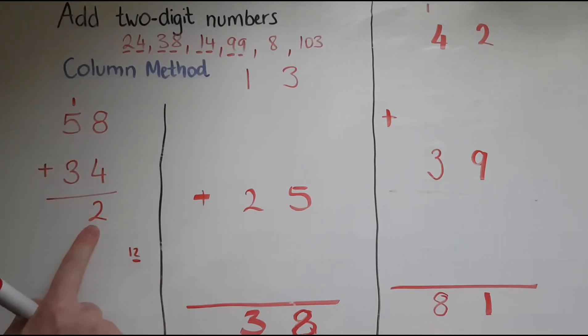So I've got 5 and the 1 makes 6, and the 3 makes 9. So 58 and 34 makes 92.